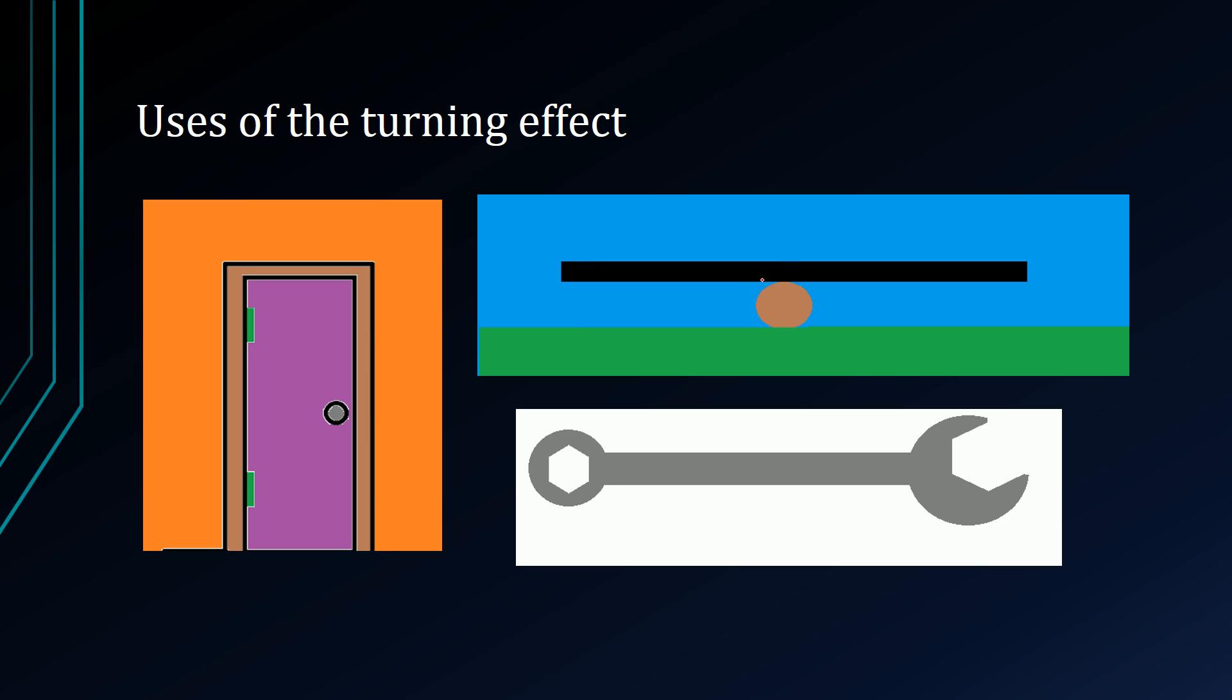Now notice in each case, the pivot, which is here, which will be the bolt here, and the hinges here, is what the object is turning about. And the object is simply in contact with that pivot.